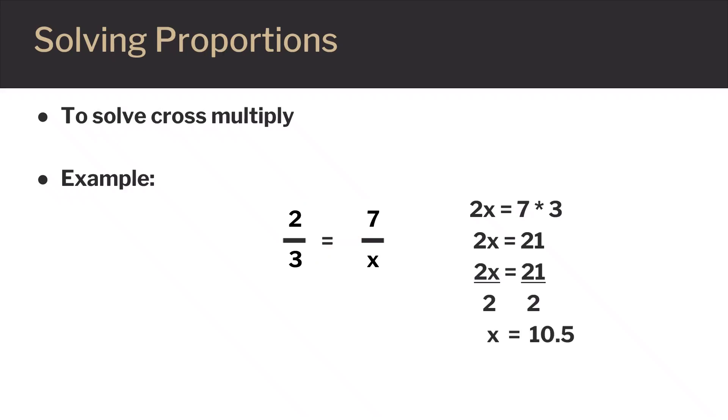To solve for X we divide both sides by two. This leaves us with just X on the left side and 21 halves on the other side. 21 halves is equal to 10.5 so X is equal to 10.5.